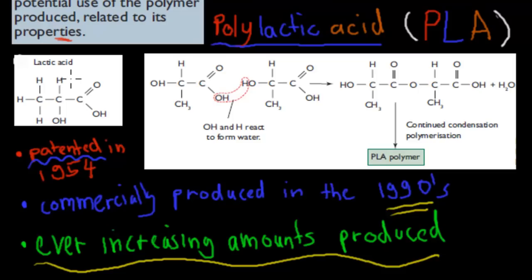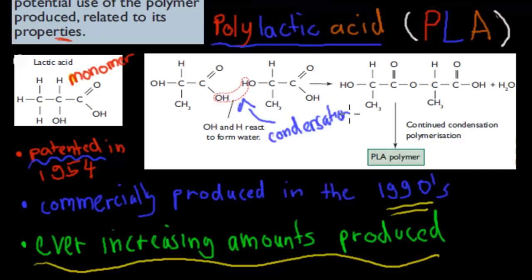Lactic acid is the monomer — it also occurs in our body, but in this case it's produced by bacteria. This monomer undergoes a condensation reaction, meaning we lose a water molecule when two monomers join together. So polylactic acid is a condensation polymer — PLA is an example of a condensation polymer.